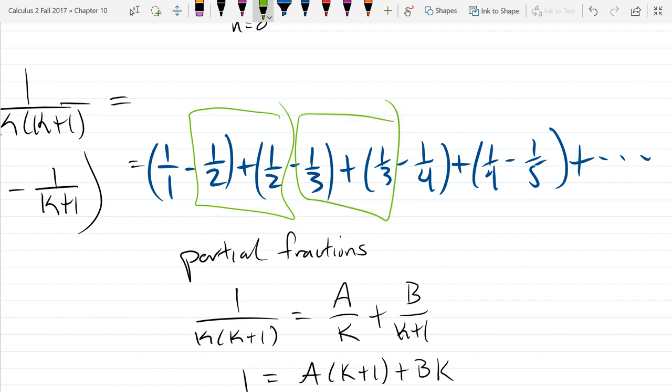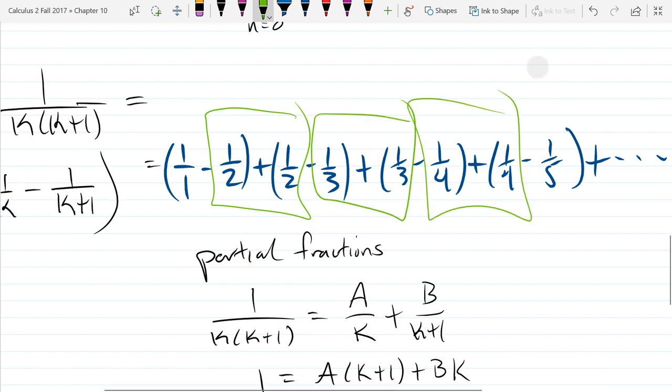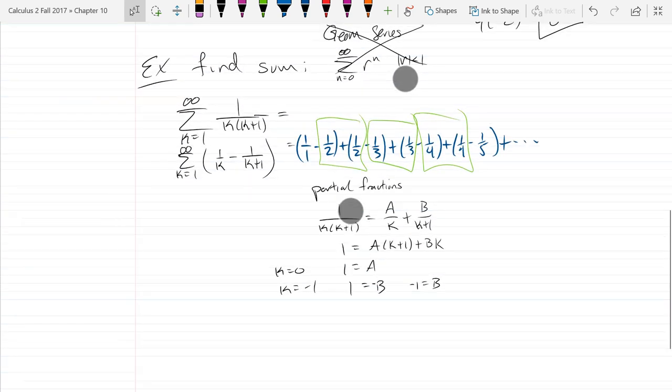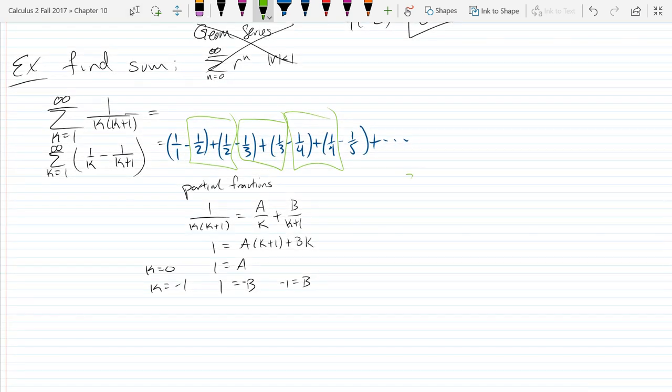So they're basically canceling out a bunch of these pairs of terms. So those two thirds will cancel, the fourths cancel. So what I wrote here is the first four terms. So this would be the S4, the partial sum of the first four terms. So I can write Sn is 1 over 1 minus 1 over n plus 1. So that's the partial sum of the first n terms.